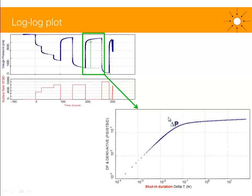You can also take the derivative of this delta P — shown here in red. This is the derivative of delta P, or the PBU pressure, with respect to the time function. We won't go into too much detail for this presentation, but we're going to spend a bit more time on this plot.